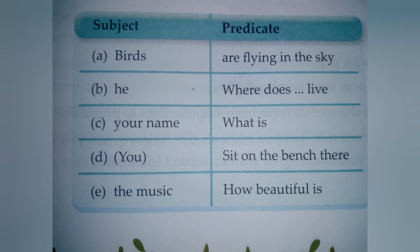The predicate is the rest of the sentence, where the verbs, adjectives, and helping verbs are involved. For example, 'are' is a helping verb, 'flying' is a verb, 'Where does live?', 'What is?', 'Sit on the bench there', 'How beautiful is' — beautiful is an adjective. These all are verbs and adjectives. So simply, nouns and pronouns are the subject, and the rest of the sentence is the predicate.